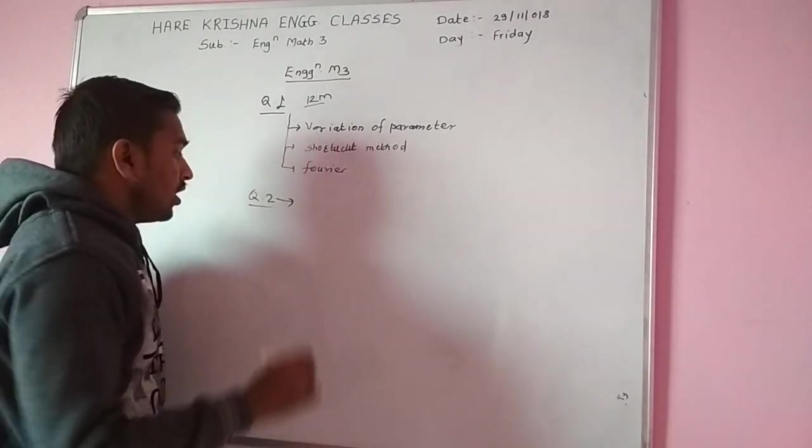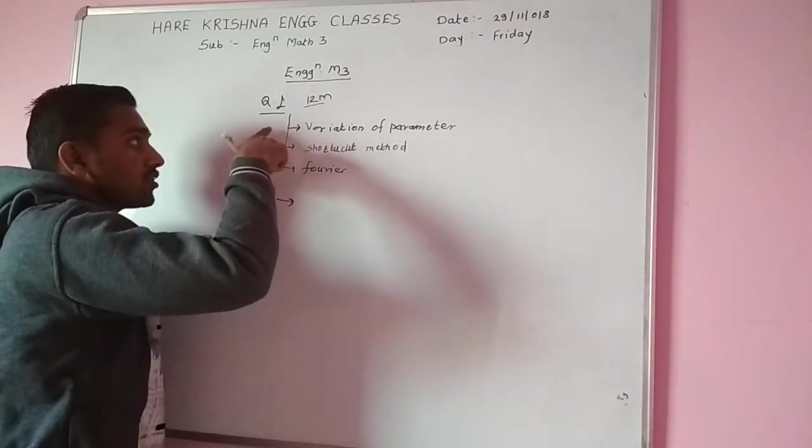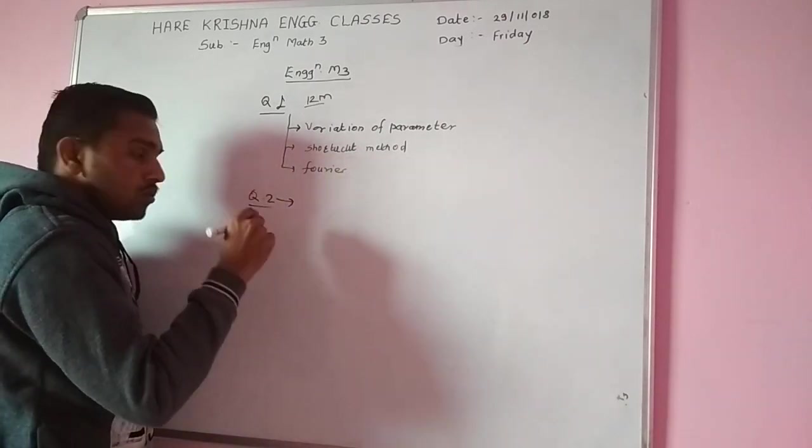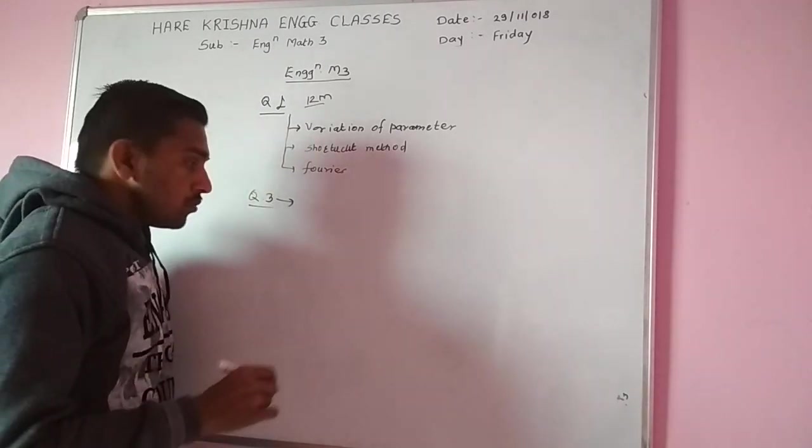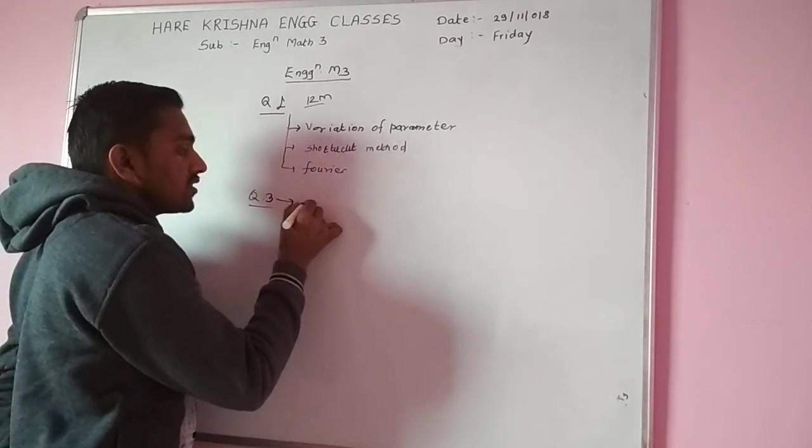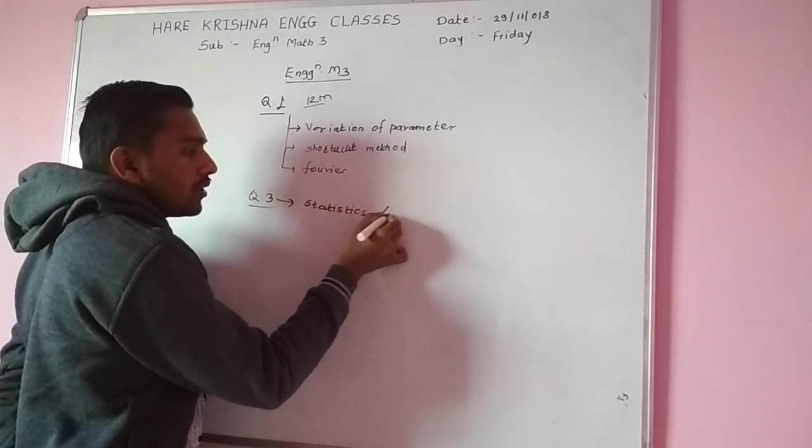Now question number second, don't solve question number second. Solve question number three because one is four for two. Now we can solve question number three which is most important: statistics and probability.